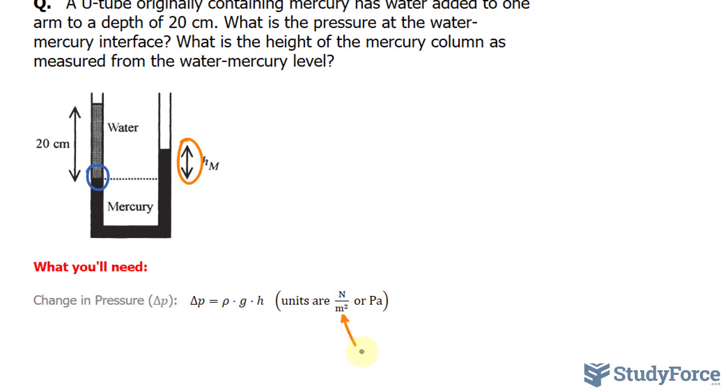The height needs to be in meters because the units for pressure are newtons per meter squared, or Pascal, so we need to make sure that it's in meters. I'll go ahead and change 20 centimeters into meters, and that's easy, just divide by 100, we get 0.20 meters.